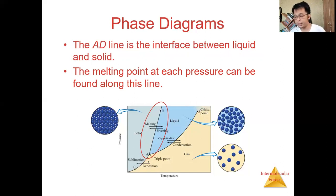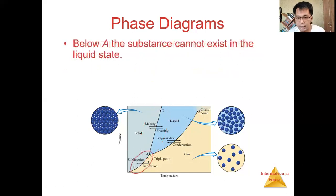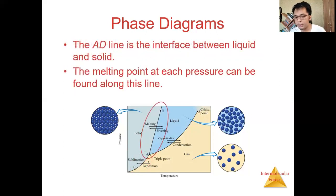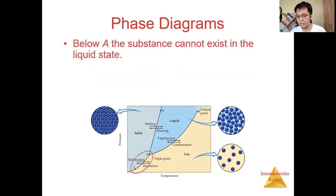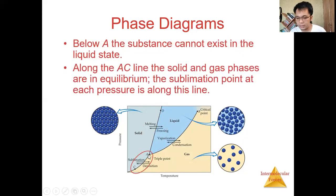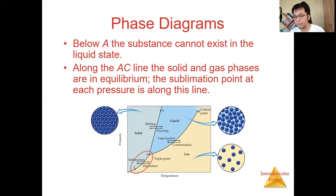The substance can be either liquid or solid depending on temperature and pressure. The line from A to C is the interface between solid and gas. Along this line at a specified temperature and pressure, sublimation and deposition occur simultaneously — the substance can be either gas or solid. This is a typical example of a phase diagram.